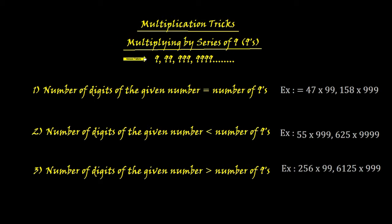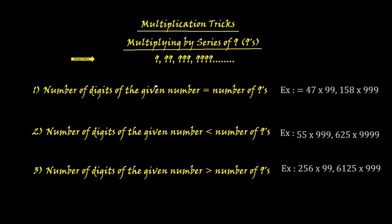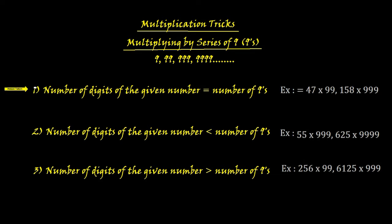These are examples for the nines series: nine, ninety-nine, triple nine, nine-nine-nine-nine. We are going to see the trick — how to multiply any number by these series of nine really quick, within one or two seconds, faster than a calculator, and it will be 100% accurate. No need to recheck your answer. There will be three cases.